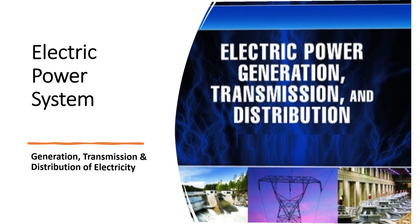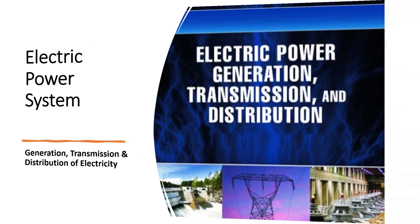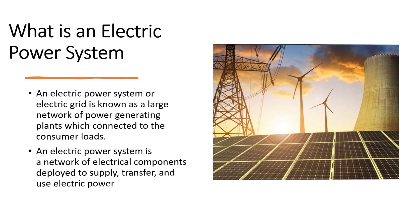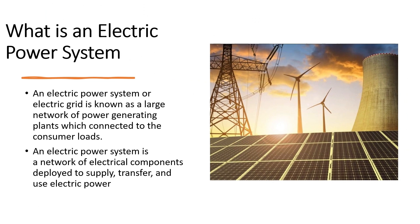So let us start with definitions. An electric power system, or electric grid, is known as a large network of power-generating plants which are connected to the consumer loads. An electric power system is a network of electrical components deployed to supply, transfer, and use electric power.